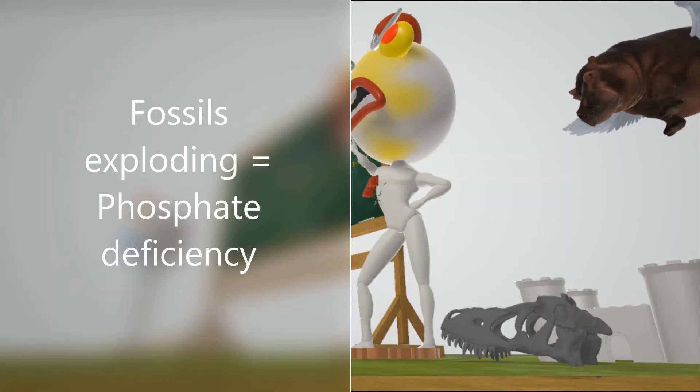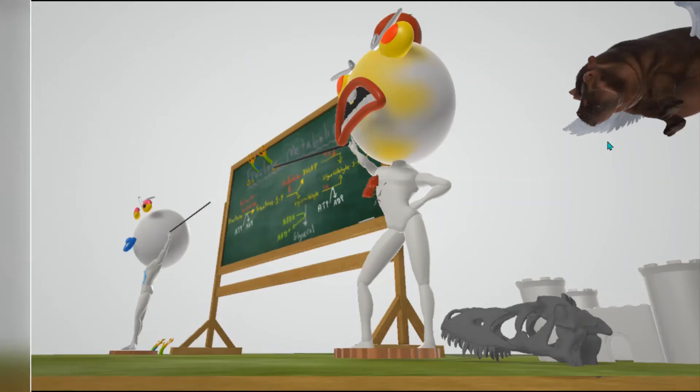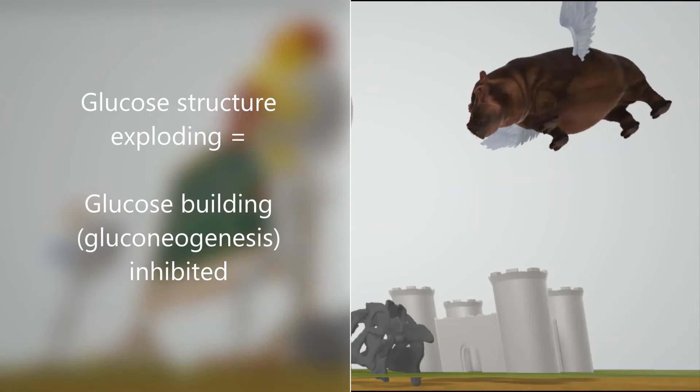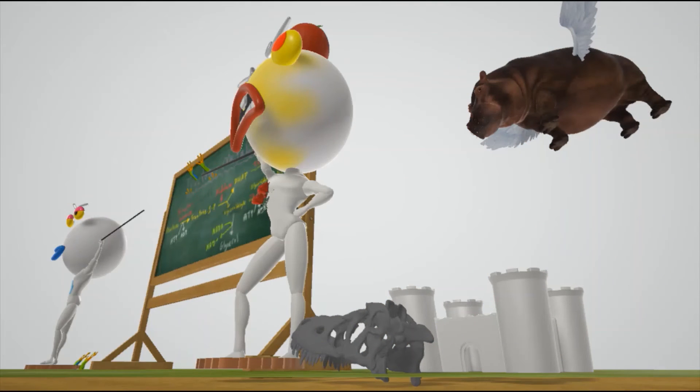When phosphate is deficient, that leads to a decrease in gluconeogenesis, the building of sugars. The building of sugars will be defective. That's why we have this structure made of sugar that the teacher likes to bring to class every day, that also explodes. The sugar structure exploding is to help us remember that gluconeogenesis will be inhibited, as well as glycogenesis, which also produces sugar.